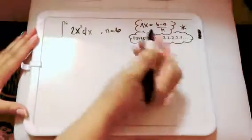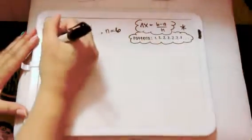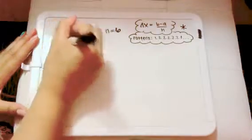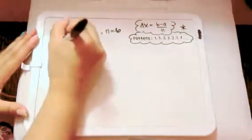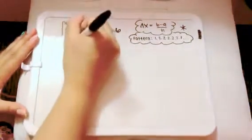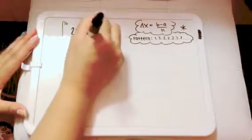So the first thing we want to do is find delta x using this here. So b minus a, 6 minus 0 over n, which is 6, and that leaves us with just 1.